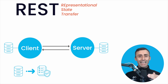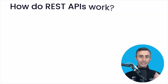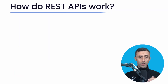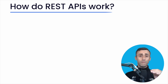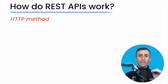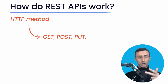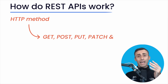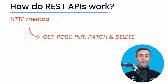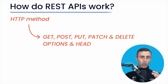Let's understand how REST APIs work. All communication done via REST APIs follows HTTP requests. These requests can be of the type GET, POST, PUT, PATCH, and DELETE. There are more, like OPTIONS and HEAD, but they are not that important for now.